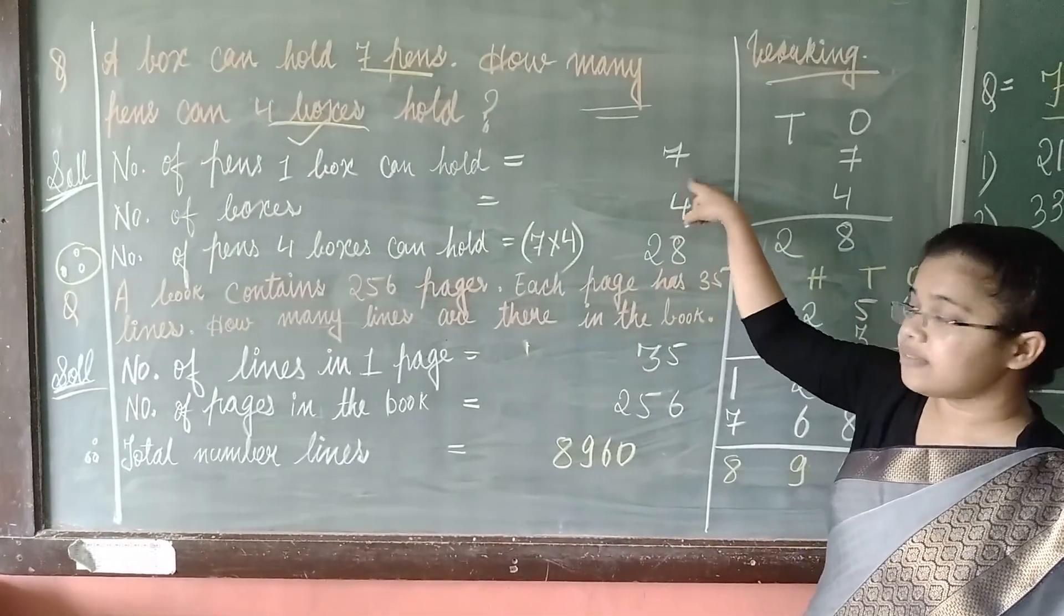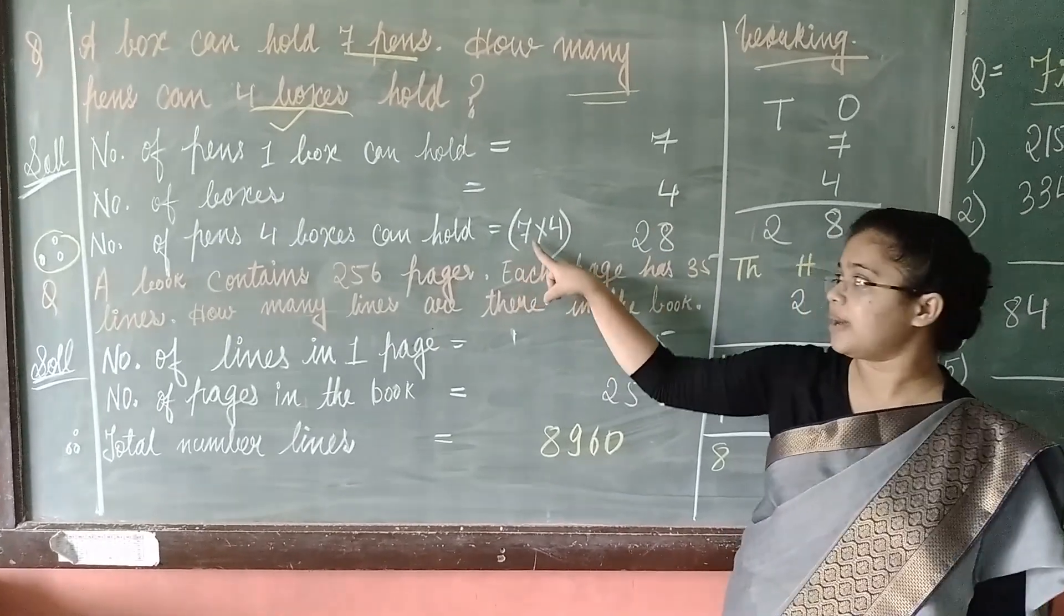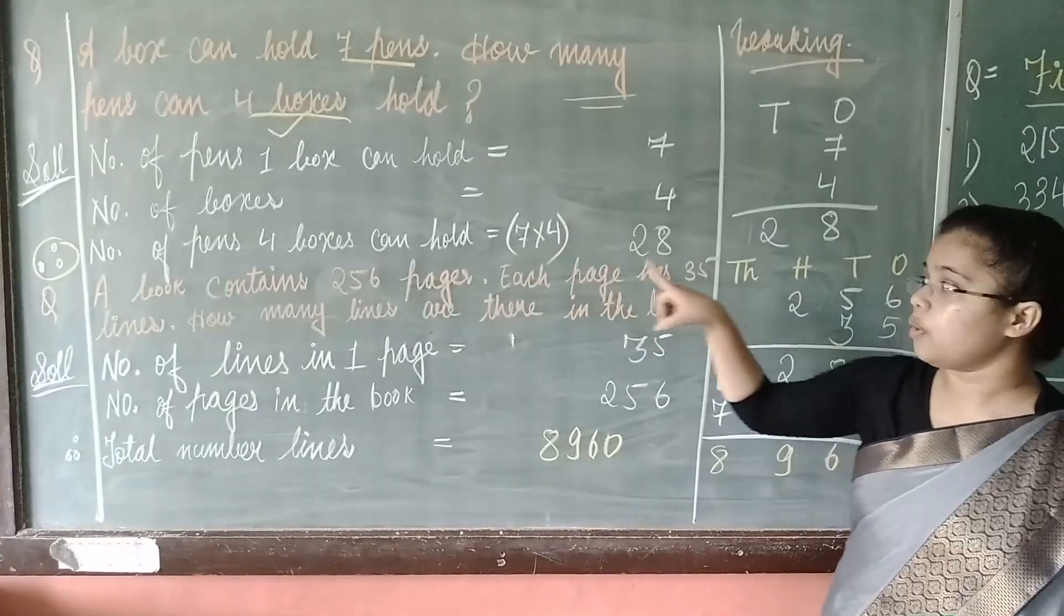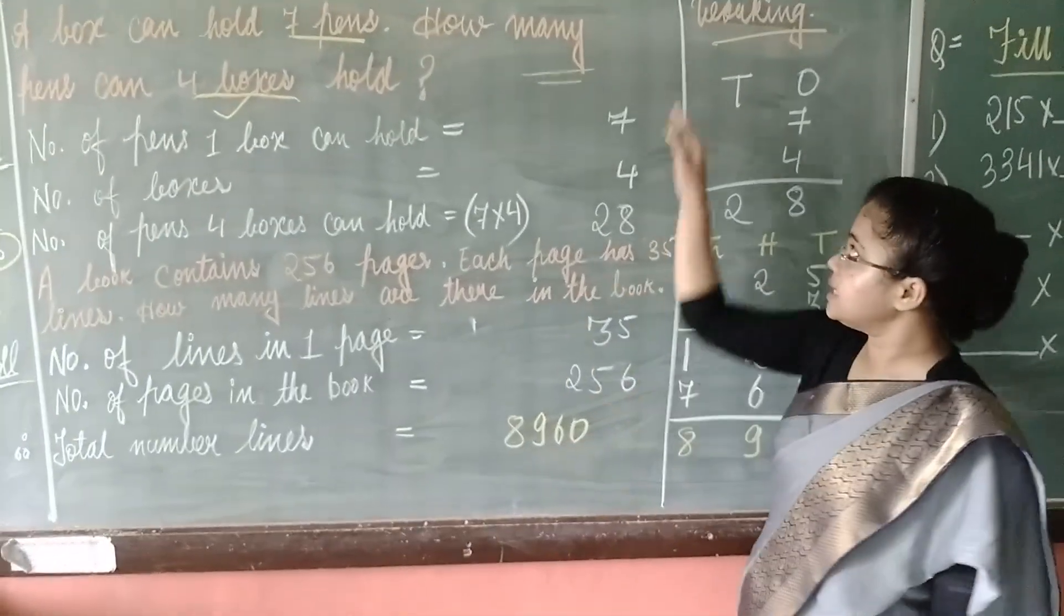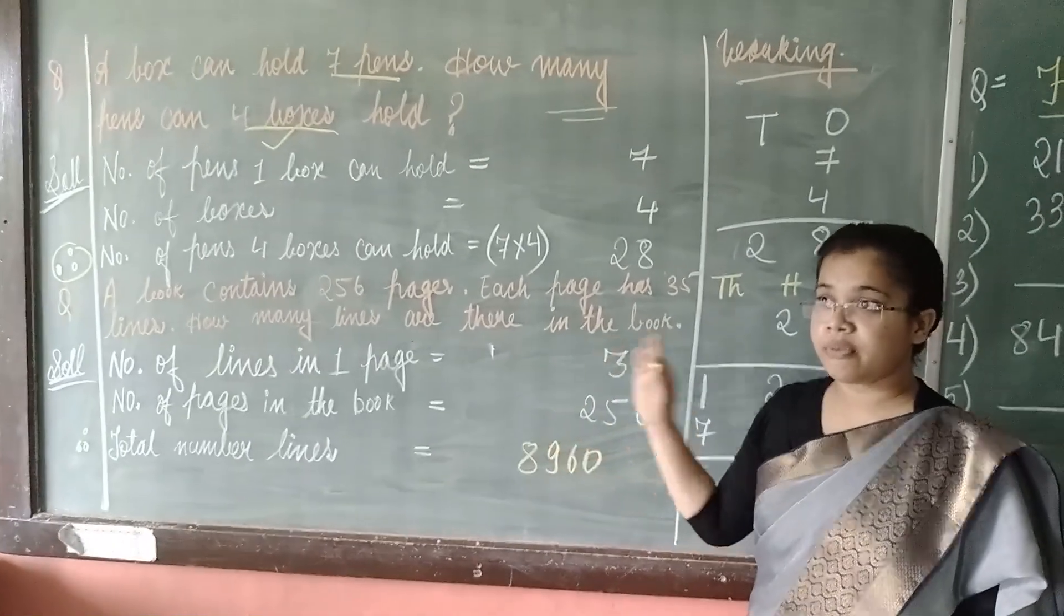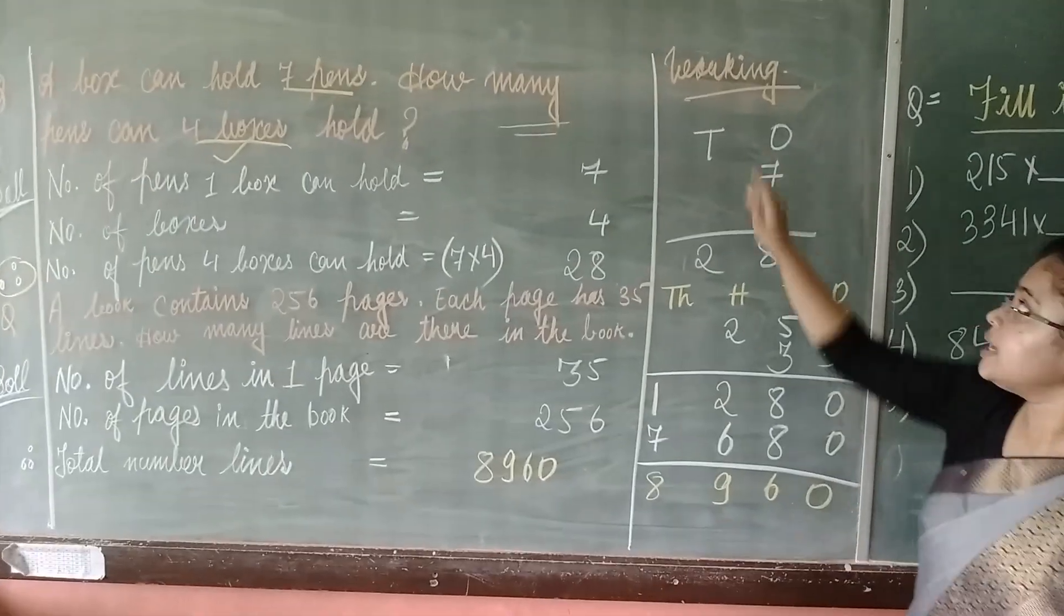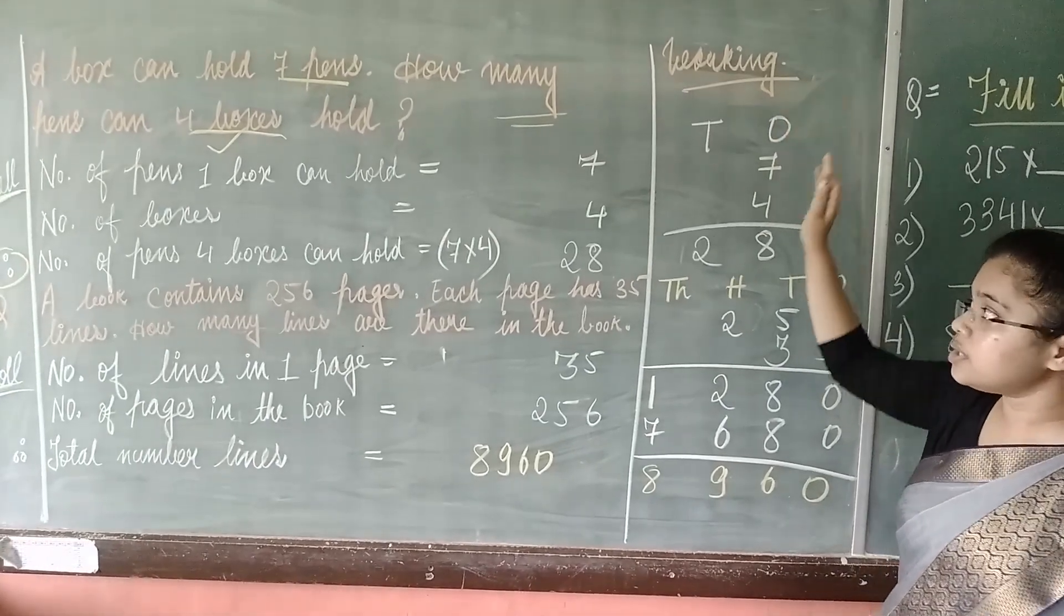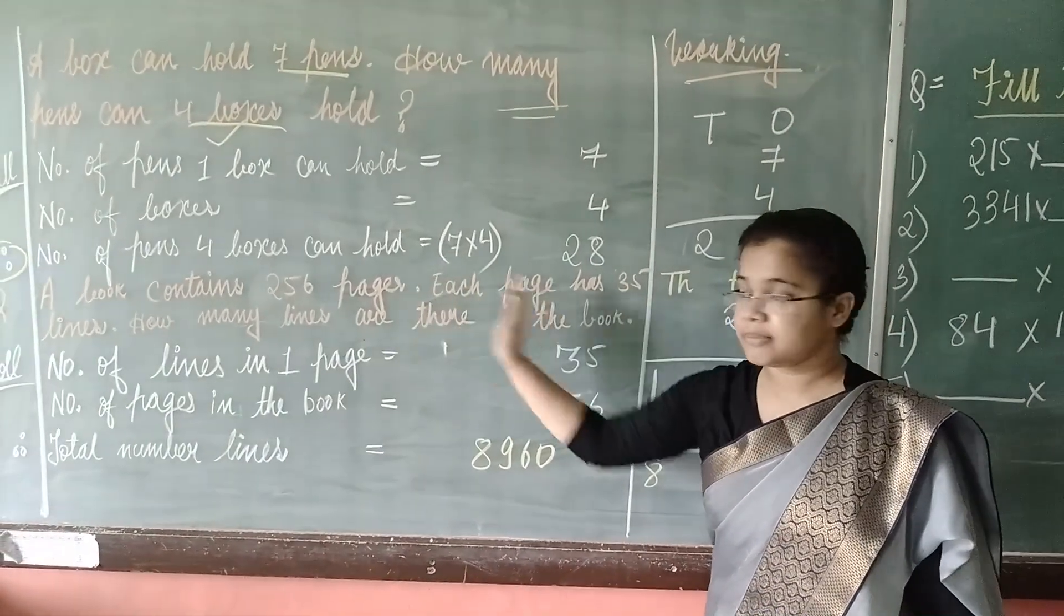We have 7 pens in one box and there are 4 boxes. That is why we will multiply 7 into 4. That is 28. And I have already told you earlier that first of all, before solving or before writing, you have to make a working column like this. You have to write working and show the working here. Please don't do the working on this side.